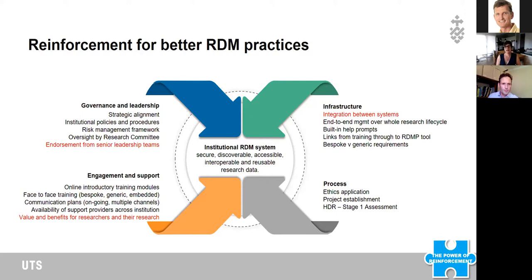In terms of engagement and support, the biggest thing we can do is raise awareness about the importance of data management and how to do it. We can't expect researchers to meet their individual responsibilities if they're not aware of them. So it's important to have a range of training modules available in different formats on an ongoing basis. Communication likewise needs to be done on an ongoing basis through multiple channels, and the support available to researchers also needs to be very open and transparent. We need to focus on the value and benefits for researchers — they're less likely to engage with risk and compliance obligations; they want to know what's in it for them.